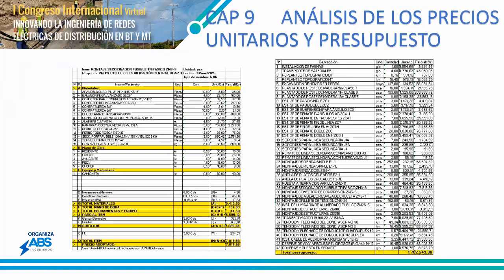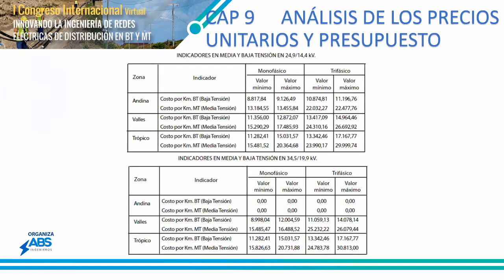Estas son tablas de Excel que manejamos para generar análisis de precios unitarios y un presupuesto general. Por ejemplo, aquí tenemos una estructura — es un seccionador — que tiene su cantidad de materiales, mano de obra, equipo, gastos de materiales, utilidad y gastos generales, y de ahí nos genera un precio unitario. Por la cantidad del ruteo de nuestro proyecto de electrificación rural, podemos llegar a un monto total del proyecto. También es muy importante manejar estos precios referenciales.